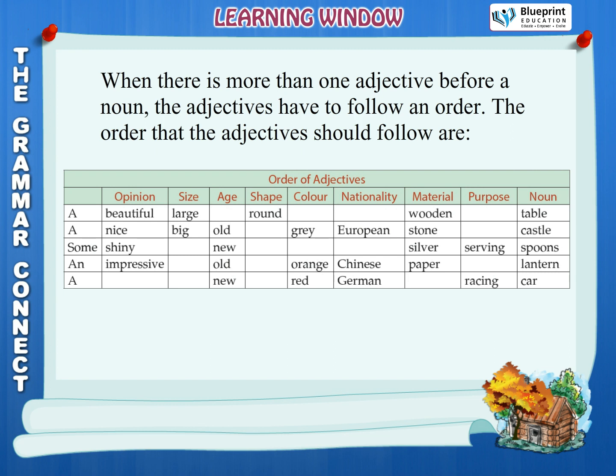Examples of adjective order: a beautiful, large, round, wooden table; a nice, big, old, grey, European stone castle; some shiny, new, silver serving spoons; an impressive, old, orange, Chinese paper lantern; a new, red, German racing car.